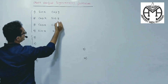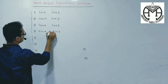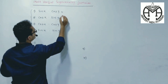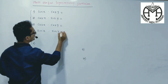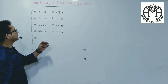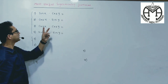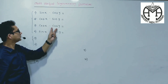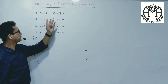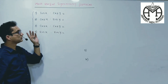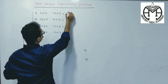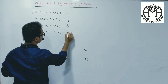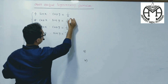Let it be Y, Y, Y, Y. Now here it is one-half, one-half, one-half, and minus one-half. In the first group formula,